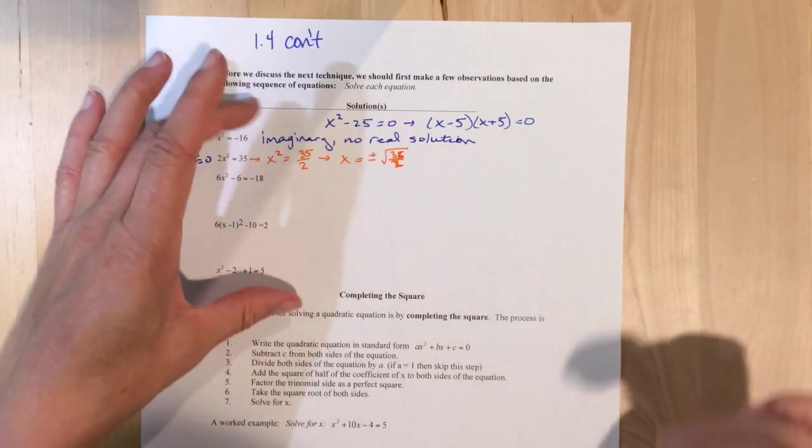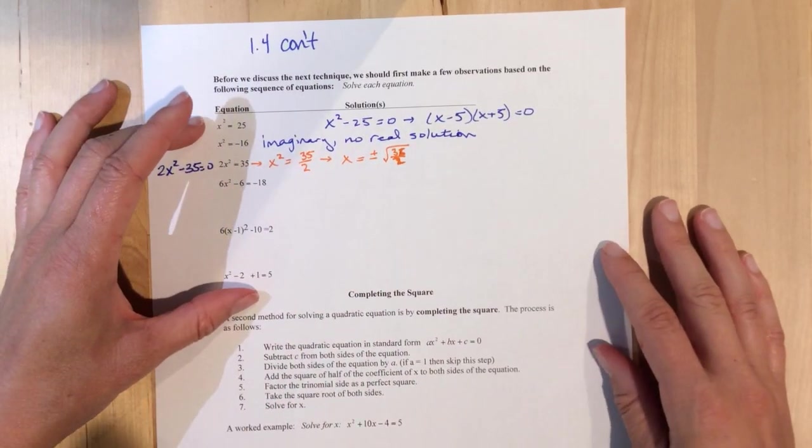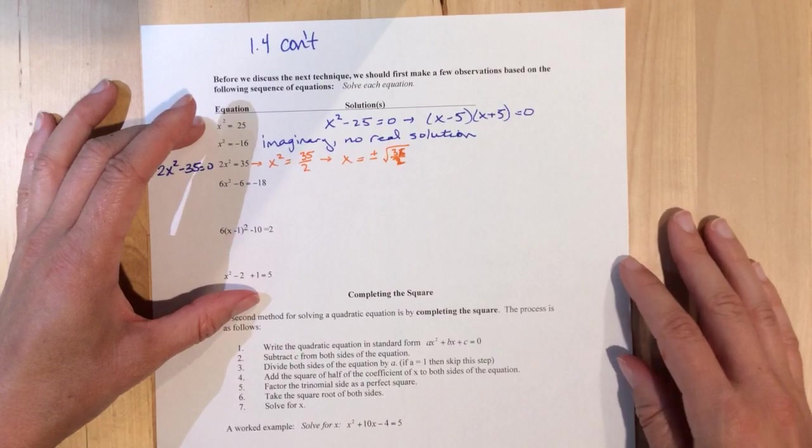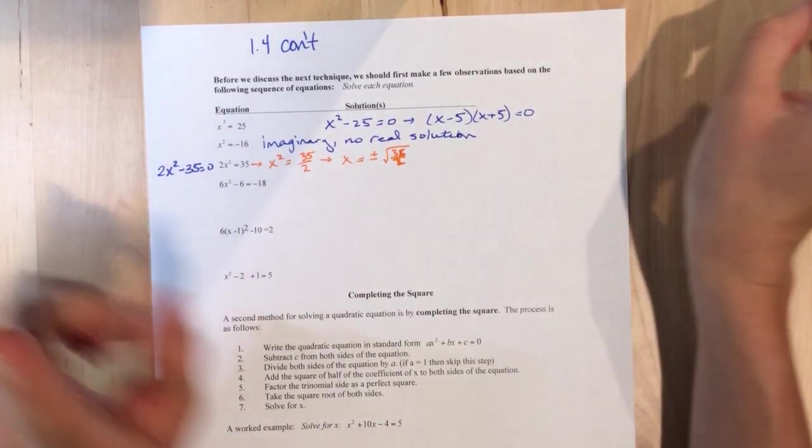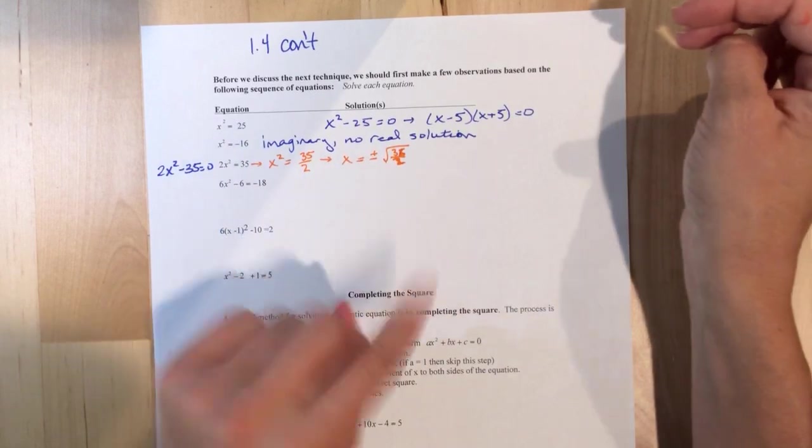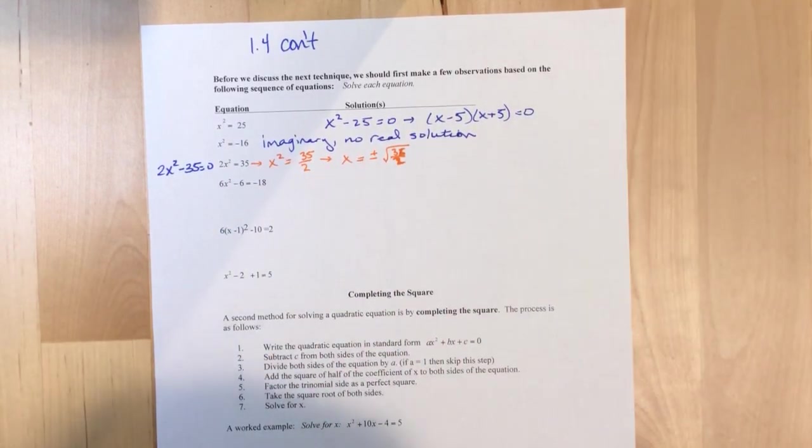So this is called the square root technique, or what does the book call it? Via the square root property, the square root principle, square root, oh, I think square root method. Yeah, there you go. Square root method.